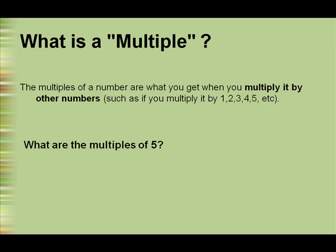So what are the multiples of 5? Basically, 5 times 1 is 5, 5 times 2 is 10, 5 times 3 is 15, 5 times 4 is 20, and so on. These are all multiples of 5.